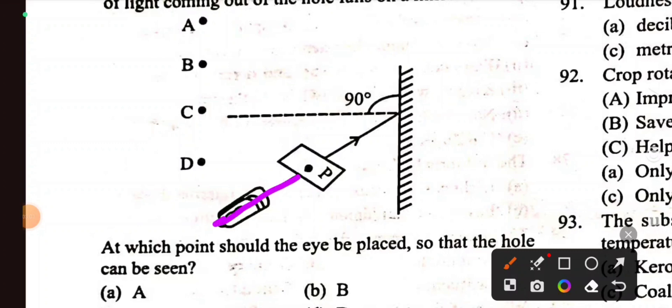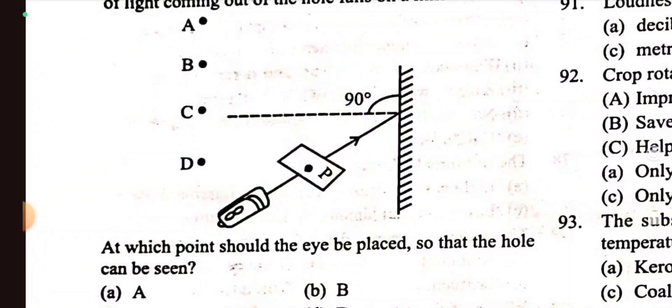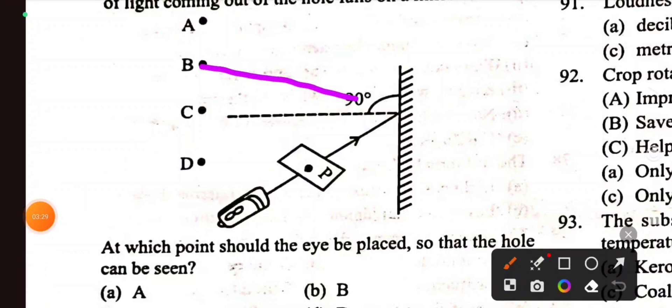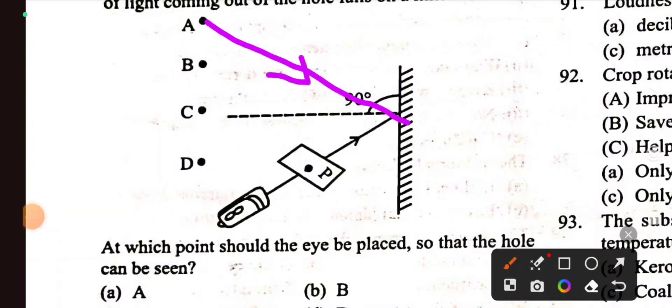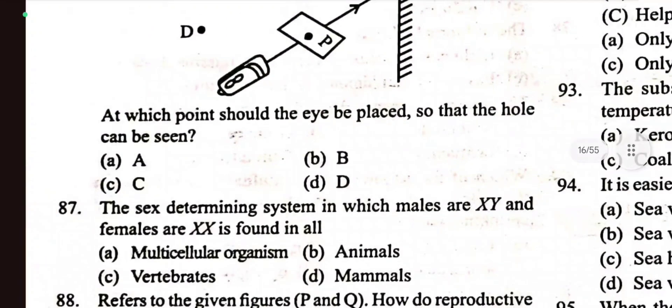To see this hole, incident ray angle of incidence must equal the angle of reflection. So the incident ray must equal the reflected ray. So the eye must be placed at point A. Option A is the correct answer.